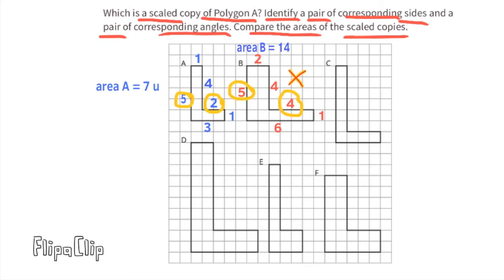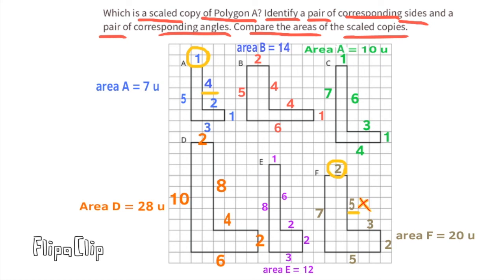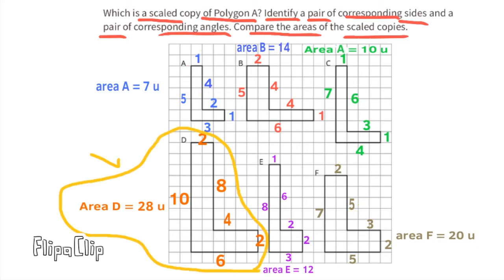All the side lengths in polygon D doubled in length, meaning they all increased proportionally, so polygon D is a scaled copy of polygon A. None of the other polygons had all their side lengths increase proportionally, so none of them can be chosen as a scaled copy of polygon A.